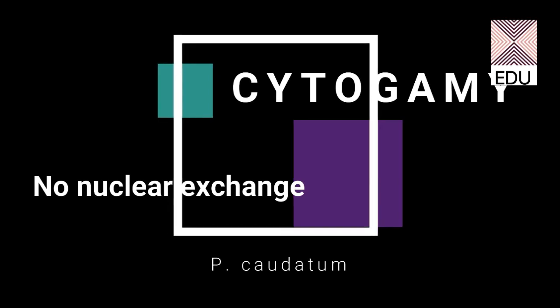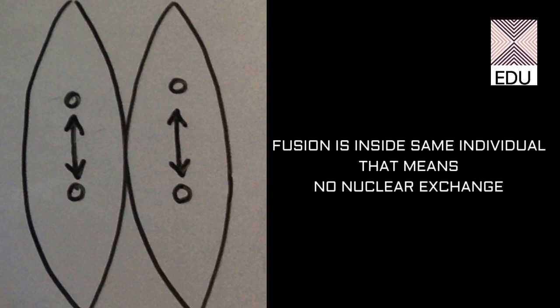The fourth type of reproductive process is cytogamy. It is considered a sexual process but not a true sexual process, and it occurs without any nuclear exchange. Cytogamy is very comparable to conjugation as it involves the temporary fusion of two paramecia, but there is no nuclear exchange between the individuals. The individuals here are called cytogamines, not conjugants. Two haploid gamete nuclei within each individual fuse to form a synkaryon — this is the key difference between cytogamy and conjugation.